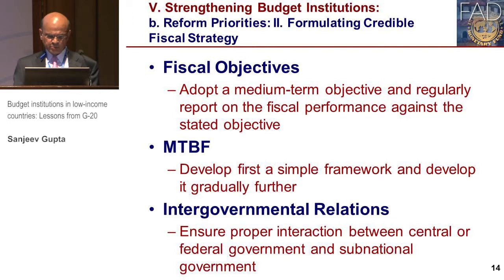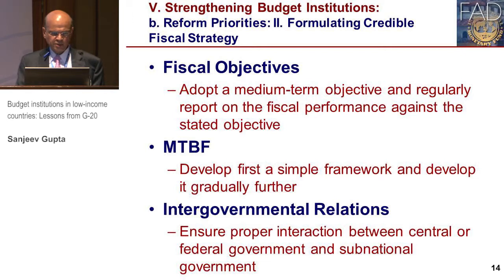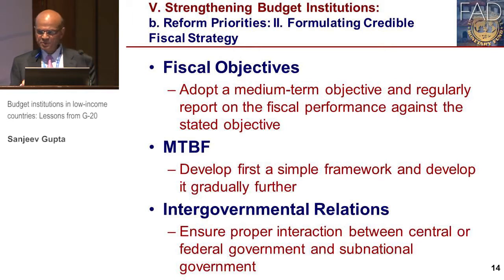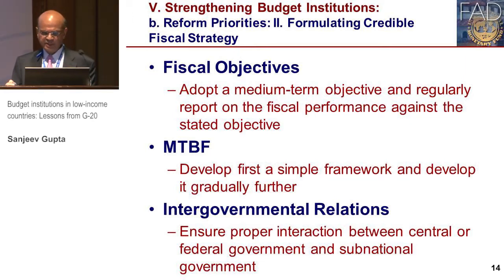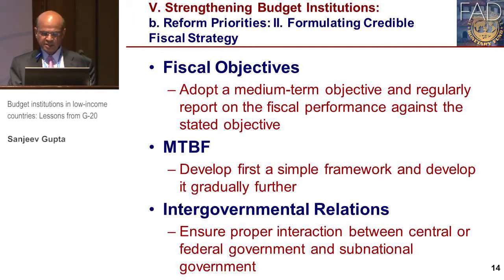The next step is to produce and publish macroeconomic forecasts along with related assumptions, and have medium-term budget scenarios. On fiscal objectives, one should adopt a medium-term objective and regularly report on fiscal performance against the stated objective. As regarding the medium-term budget framework, it should be simple and developed gradually. Finally, on intergovernmental fiscal relations, one must ensure that all levels of government bear the burden of fiscal strategy and there are no moral hazards of fiscal risk.